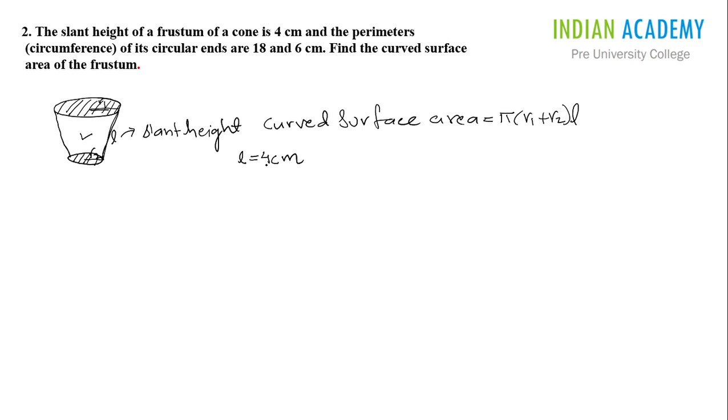They have given you the perimeters of the circular ends. We know that the perimeter of a circle is 2πr. So obviously the perimeter of the top circle will be 2πr1.